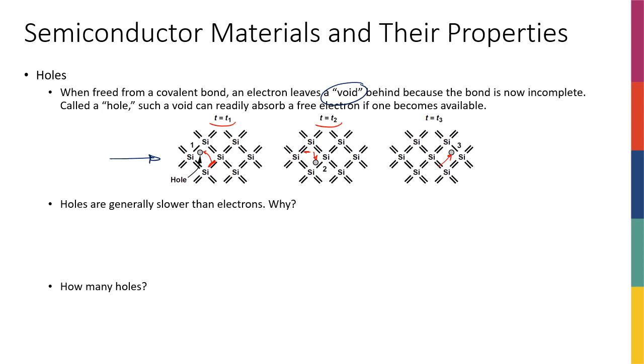One thing we'll notice later is that holes are moving slower than electrons. You might think, well, didn't you just say that electrons and holes movement are the same thing, just different perspectives?